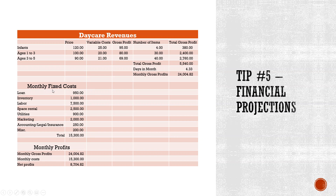Next, calculate monthly fixed costs — loan payments, inventory, labor, space rental, utilities, marketing, legal fees, and always include miscellaneous. Sum those up; in this example, $15,300. Then simply subtract monthly costs from monthly gross profit to get net profit. In this example, net profit is $8,704.82 — not too shabby for one month.